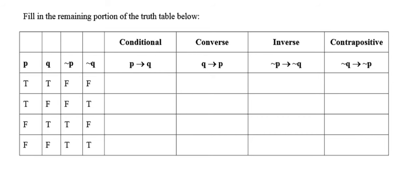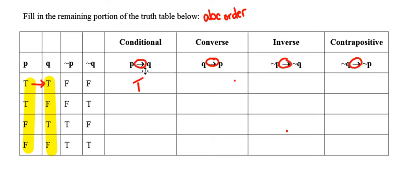Flipping to the top of the next page, they want us to fill in the truth table for the conditional, the converse, the inverse, and the contrapositive. The rule for the arrow is alphabetical order with respect to truth values — as long as the truth values aren't out of alphabetical order, it's true. For the conditional 'if P, then Q': true→true is fine; true→false is out of order, so it's false; false→true is okay; false→false is okay.